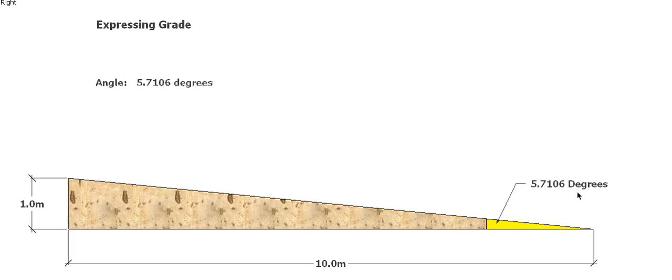To actually get the rise of that, if you do tan times the run, so tan angle will give you the rise per meter. So if you did tan 5.7106, you'll get 0.1, same as we did for our ratio. And if you then times that by the distance that you need, in this case 10, you'll get a meter. So it'll give you the rise.